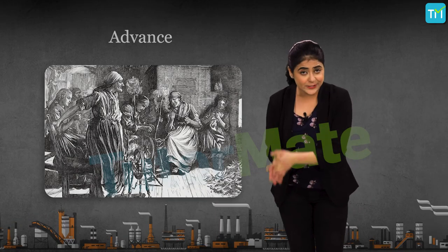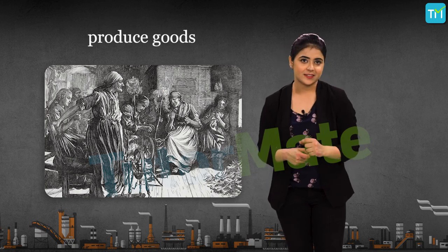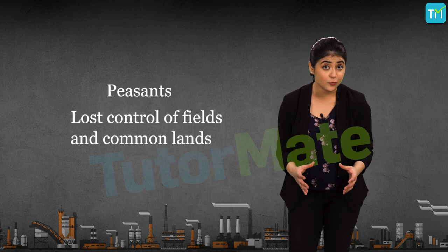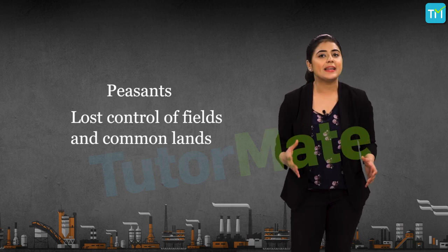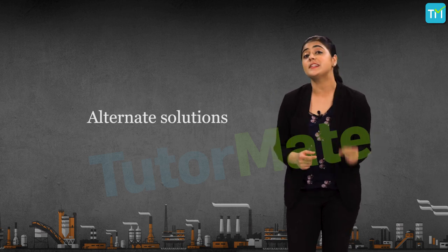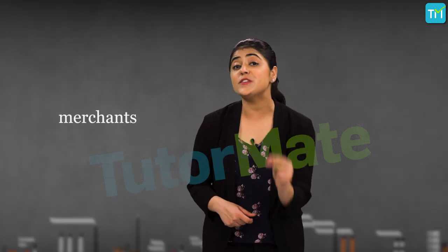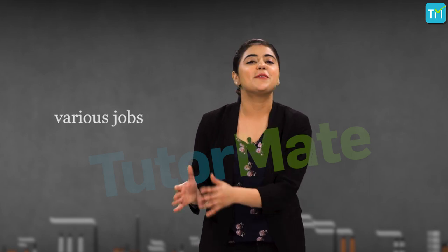Merchants gave money in advance to peasants and artisans and asked them to produce goods for the international market. This was a time when peasants had lost control of their fields and common lands they had been surviving on, so they had to find alternate solutions, as the tiny plots some had were not sufficient to provide for the entire family and family members were also out of work. That is why when the merchants paid them in advance, the peasants took up the various jobs more than eagerly.